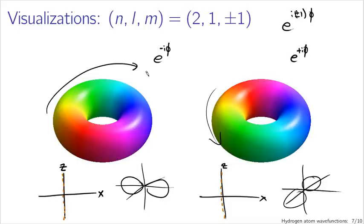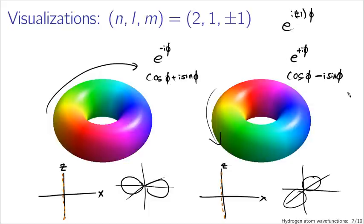Essentially, to construct real spherical harmonics you superpose complex spherical harmonics. If I take e^(−i·phi) and e^(+i·phi) and add them together, I get cosine(phi) + i·sin(phi) and cosine(phi) − i·sin(phi). Adding these, the i·sine parts cancel out, leaving just the cosine part — which is non-zero only along the x-axis where phi is zero. Combining them with a minus sign instead, the cosine parts cancel and I end up with −2i·sin(phi), giving something non-zero only along the y-axis.